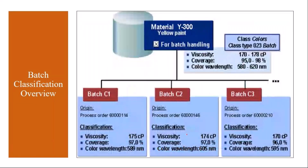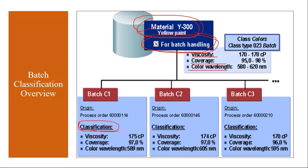Suppose you have a material that is handled in batches and you want to store some information — attributes and specifications — about this material, like its viscosity, wavelength, or coverage. You maintain those things using classification. In each batch of that material you maintain those specifications using characteristics with the help of the classification functionality.